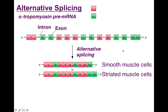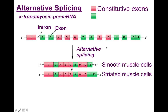Alternative splicing occurs when a gene has many different exons in between the introns. This is a diagram of the alpha-tropomyosin pre-messenger RNA — this is what's transcribed, the exons and the introns. We want to remove the introns and in some cases retain only some of the exons. In this diagram, the pink exons are constitutive exons; they are found in all versions of the alpha-tropomyosin messenger RNA. There are also alternative exons that are only present in some of the messenger RNAs after splicing.